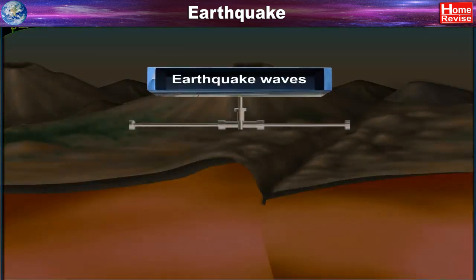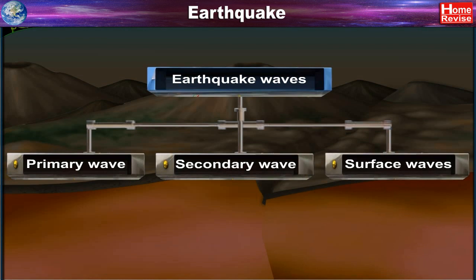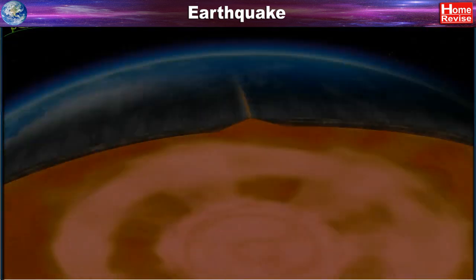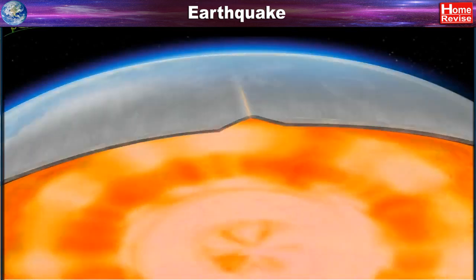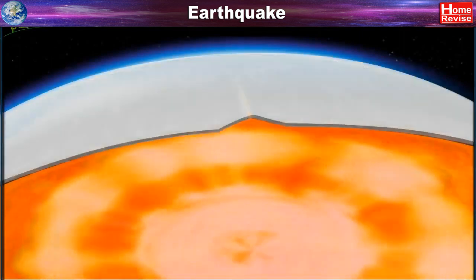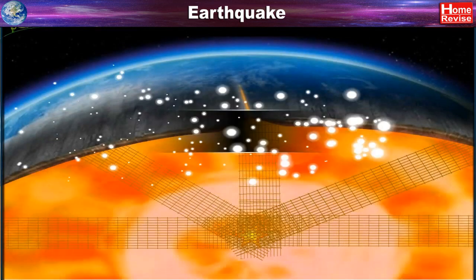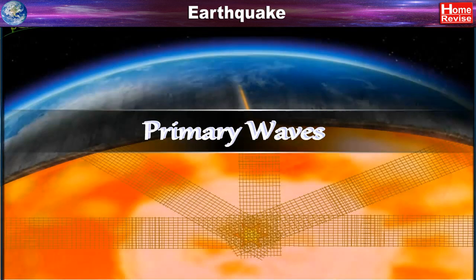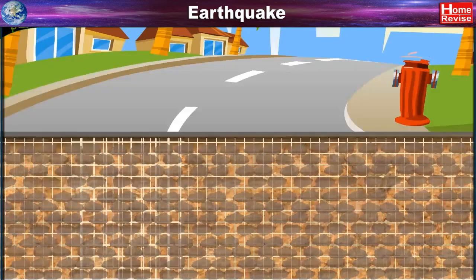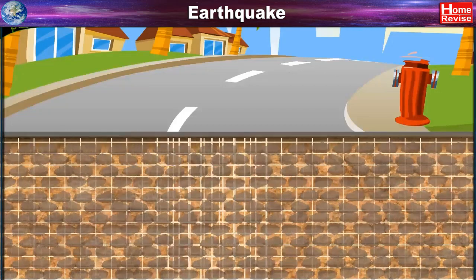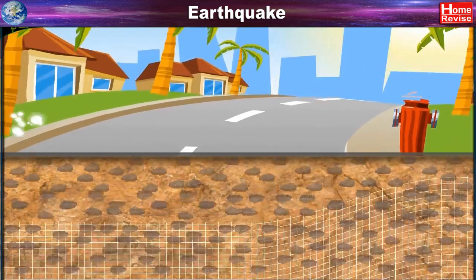Earthquake waves are of three types: primary, secondary, and surface waves. Primary waves are the waves first to reach the earth's surface immediately after the energy is released in the interior. These waves travel rapidly in a radial direction. Due to these waves, the grains in the rocks move forward and backward in the direction of the waves.